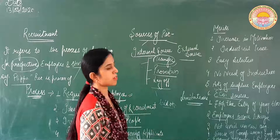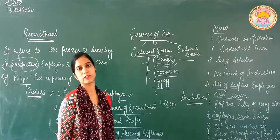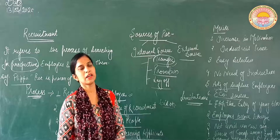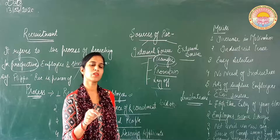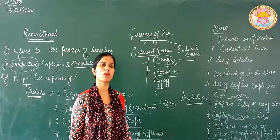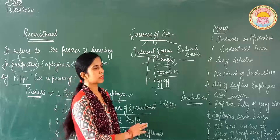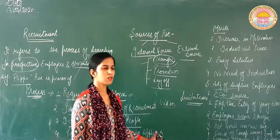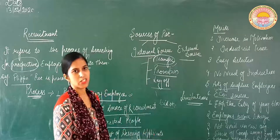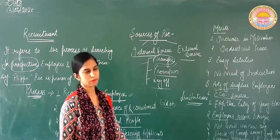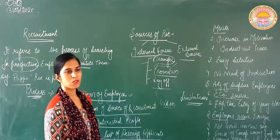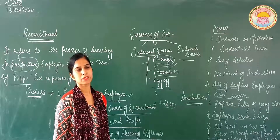Uske baad: frequent transfer hits productivity. Kya hota hai ki kabhi kabhi employees ka bahut jaldi jaldi transfer hota hai — ek department mein woh set hue, wahan ki productivity, wahan ki cheezon ko jaana, phir unko doosre department mein transfer kar diya. Isse kya hota hai ki unki jo productivity, jo capacity hai, woh dhire dhire khatam hone lagti hai, kyunki jab unko pata hai ki humein is department mein stability hi nahi hai, toh woh full efforts ke saath work nahi karti. Toh yeh hamara internal source of recruitment — internally employees ko promote kiya jata hai, transfer kiya jata hai — kuch cases mein yeh hamare liye bahut beneficial bhi hai, aur kuch cases mein nahi, jo ki humne abhi iske limitations mein padha. Toh next hum discuss karenge external source of recruitment — usko hum next lecture mein discuss karenge. Thank you.